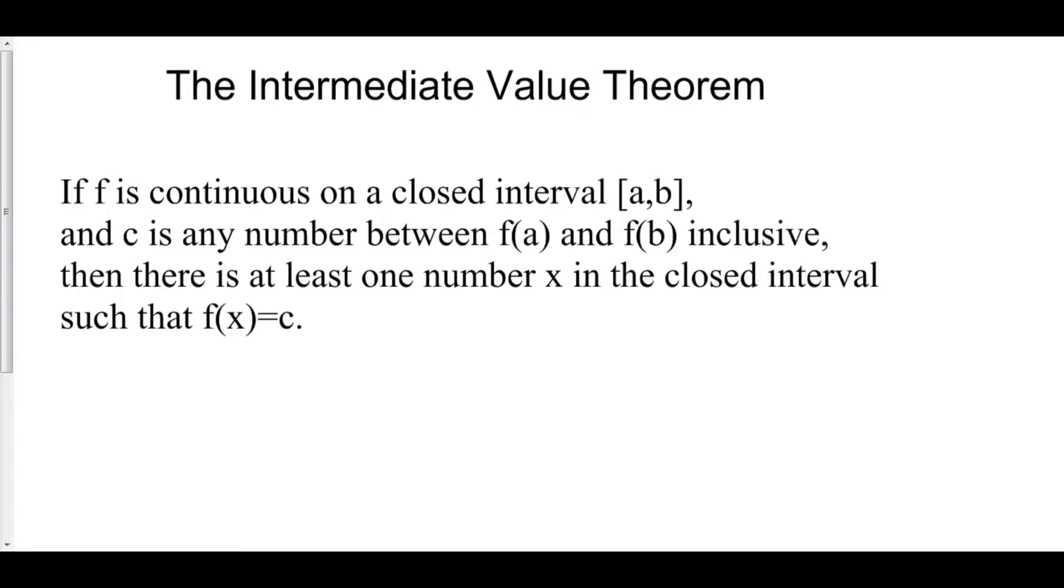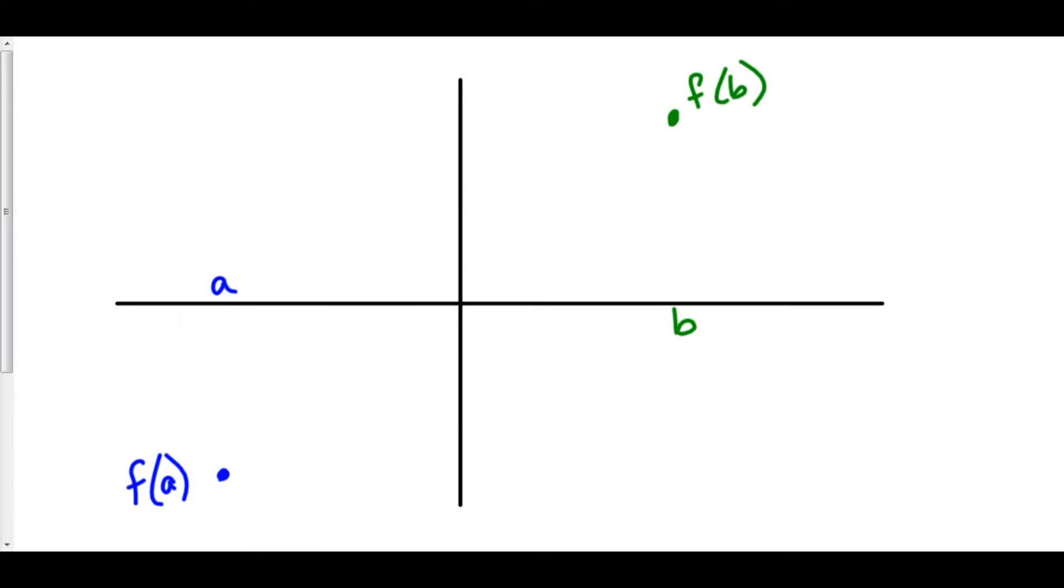Now, IVT, the Intermediate Value Theorem, is the most no-duh theorem of all time. What it's basically saying is, we have some a on the left, the function value at a, we have some b on the right with a function value at b.